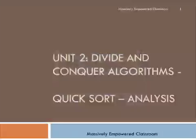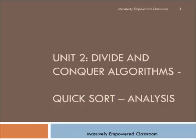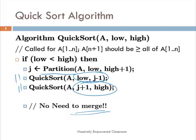We have already seen how quicksort works. In this lesson we do the analysis of quicksort, both its worst case and average case time complexity. We will also look at an iterative version of quicksort which eliminates the recursive calls. Quicksort is a divide and conquer algorithm. If the input is not small, it calls the partition algorithm and then calls itself recursively for the left partition and the right partition.